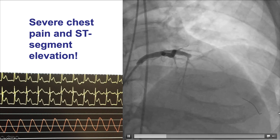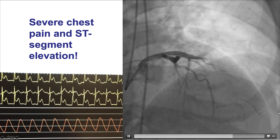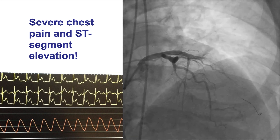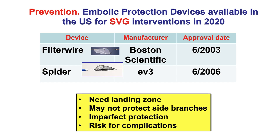This is very suggestive of distal embolization rather than dissection, which could also be a complication of stent implantation. Could we have prevented it? Potentially, using an embolic protection device might have helped. However, it is hard to always predict when embolization will occur, and the currently available protection devices — the filter wire and the Spider — can be challenging to use and have some limitations.